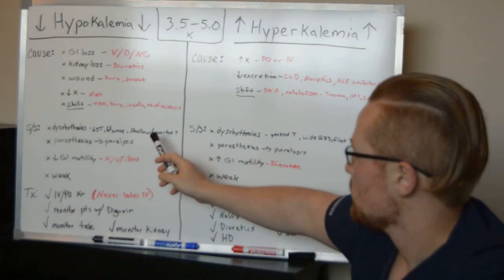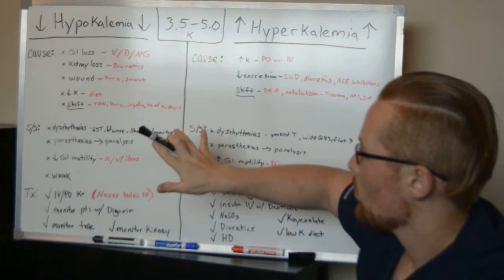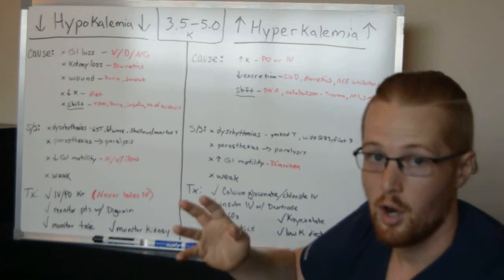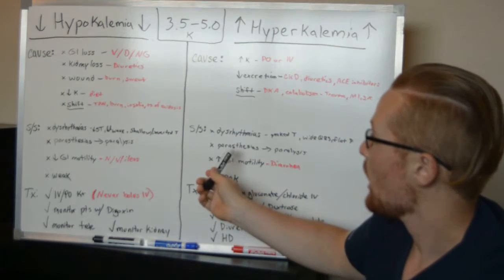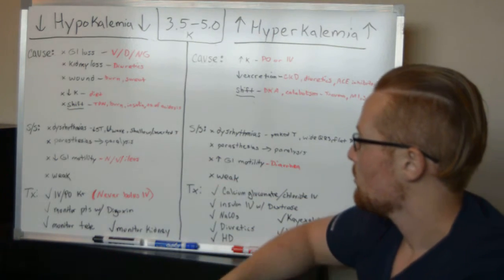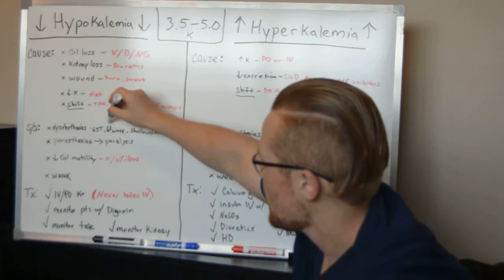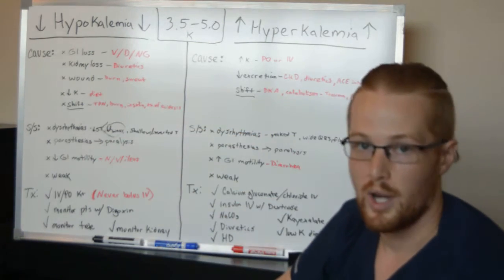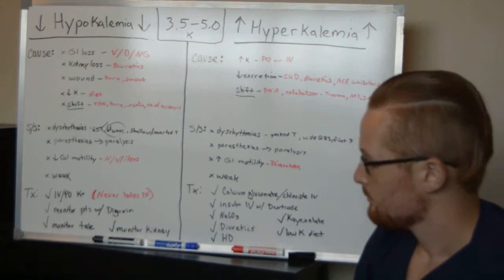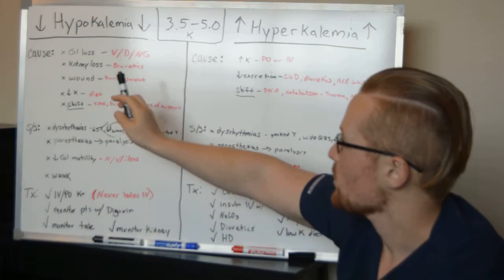So let's talk about signs and symptoms. Potassium, one of its biggest impacts is on the heart. And so with low or high potassium, you'll see dysrhythmias. But one big thing you'll want to see, and you'll see this on the test, is low potassium will cause something called a U-wave. And so you'll want to remember U-waves are hypokalemia.